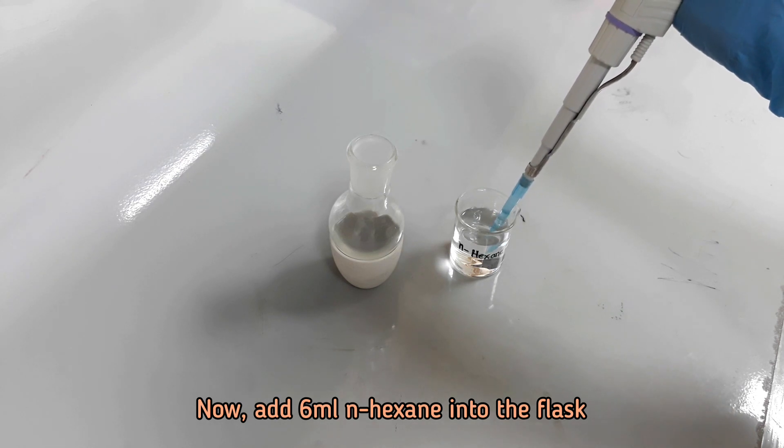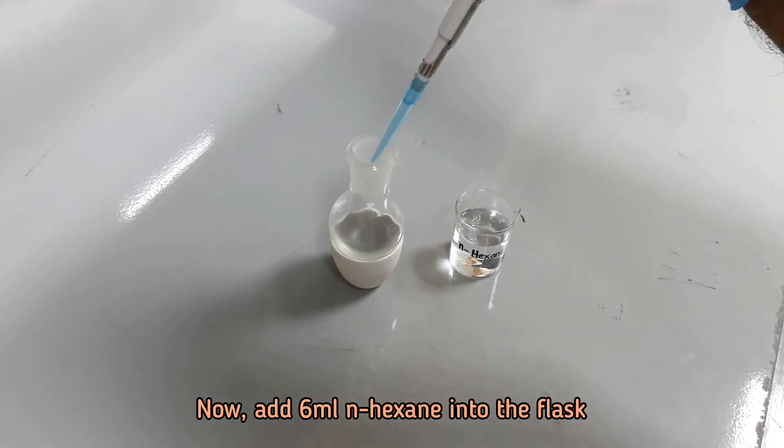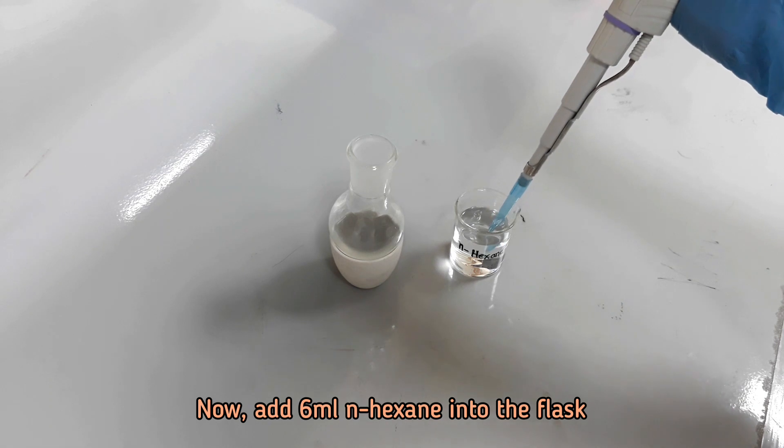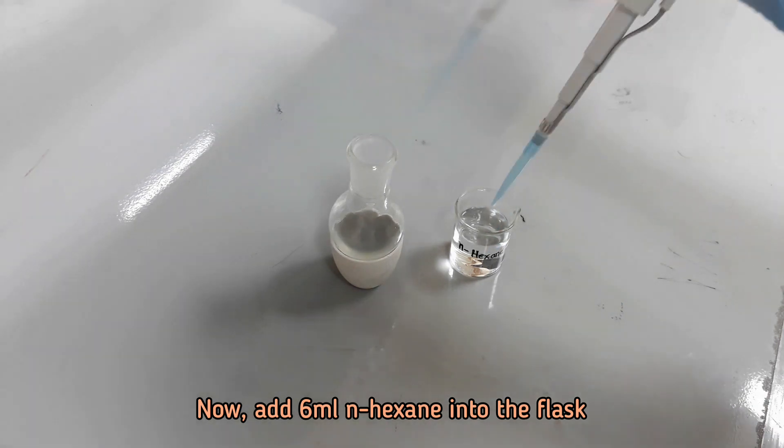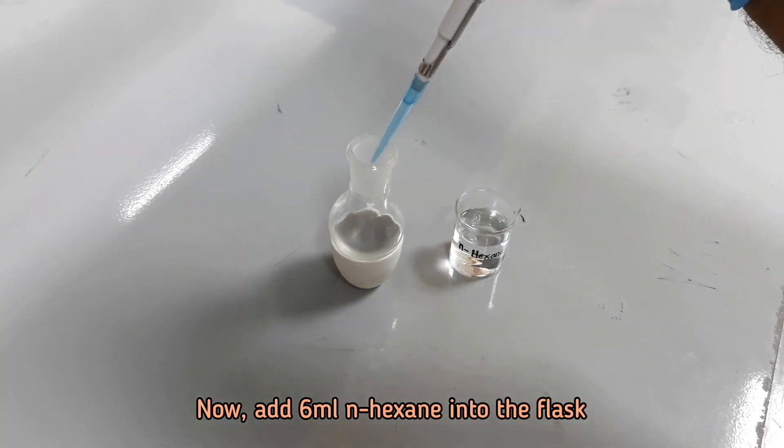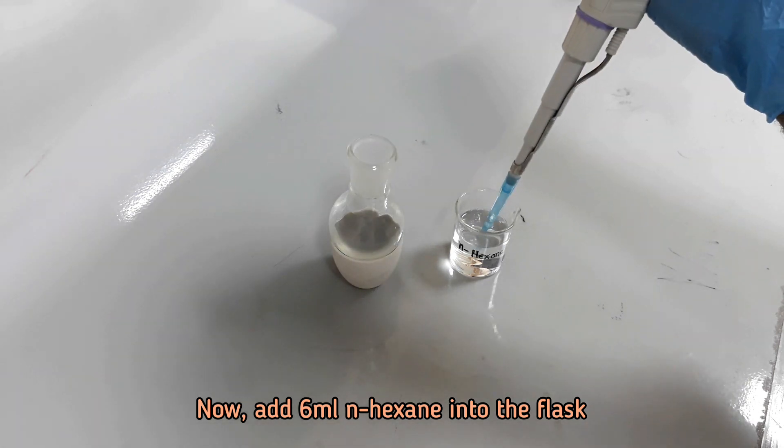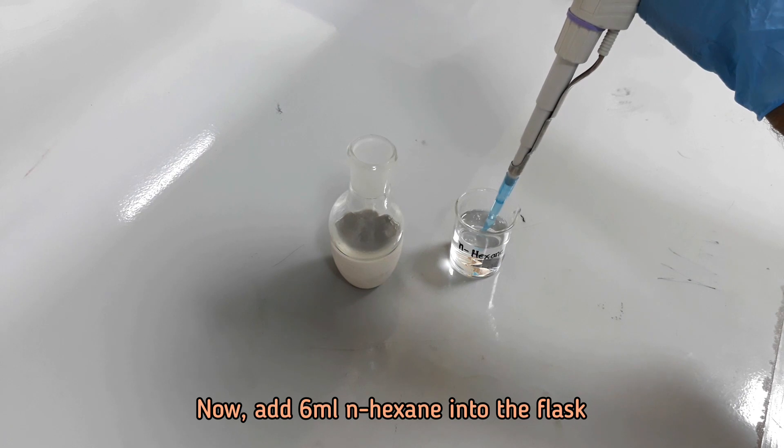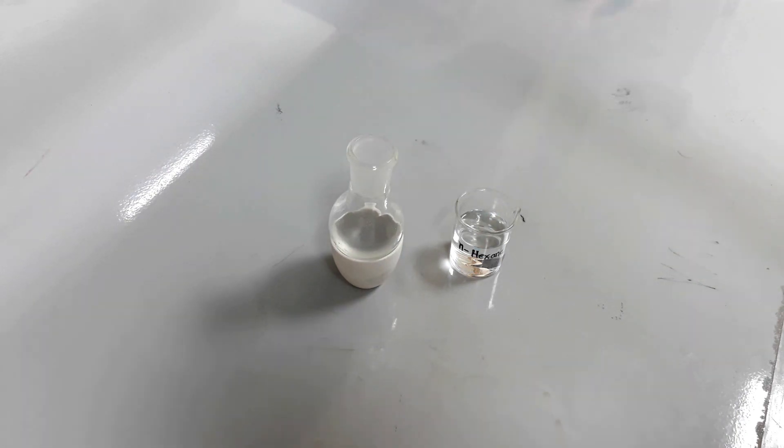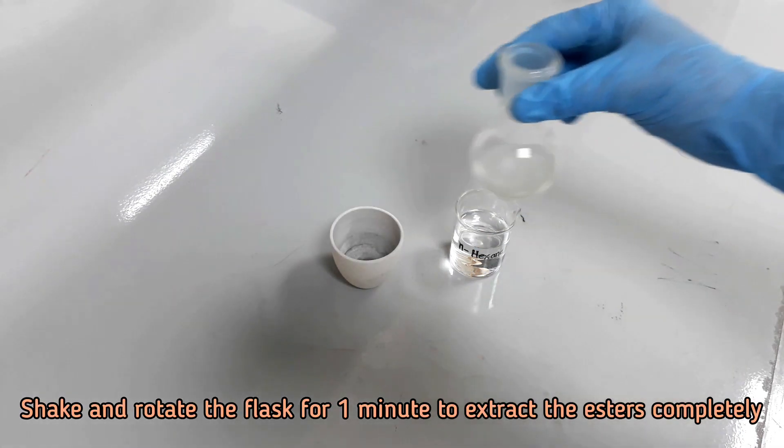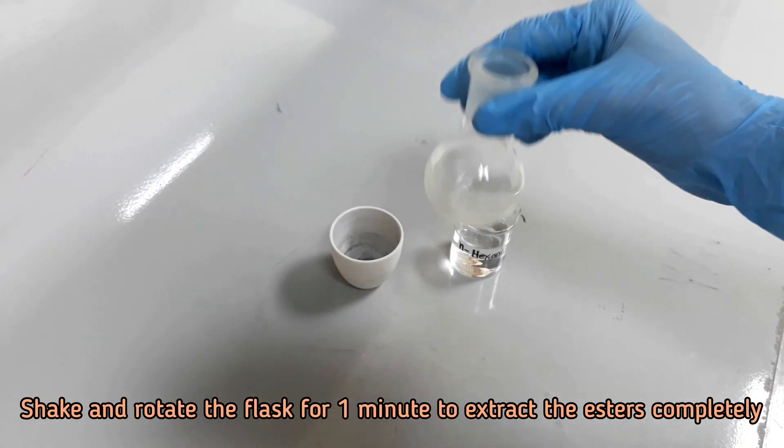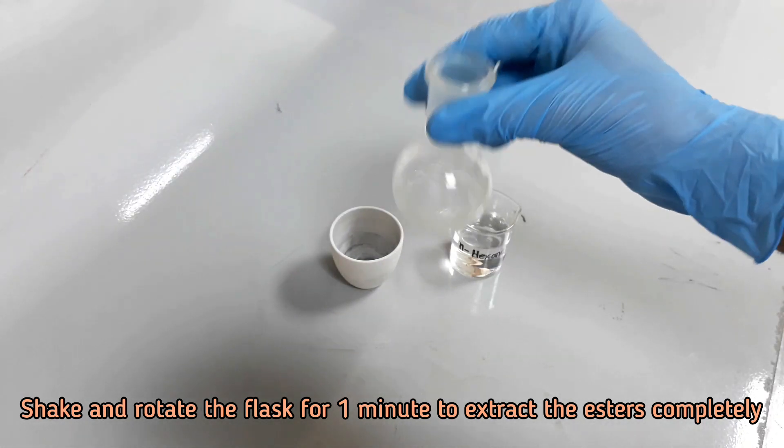Add 6 ml N-hexane into the flask. Shake and rotate the flask, ensuring complete extraction of the fatty acid methyl ester content.